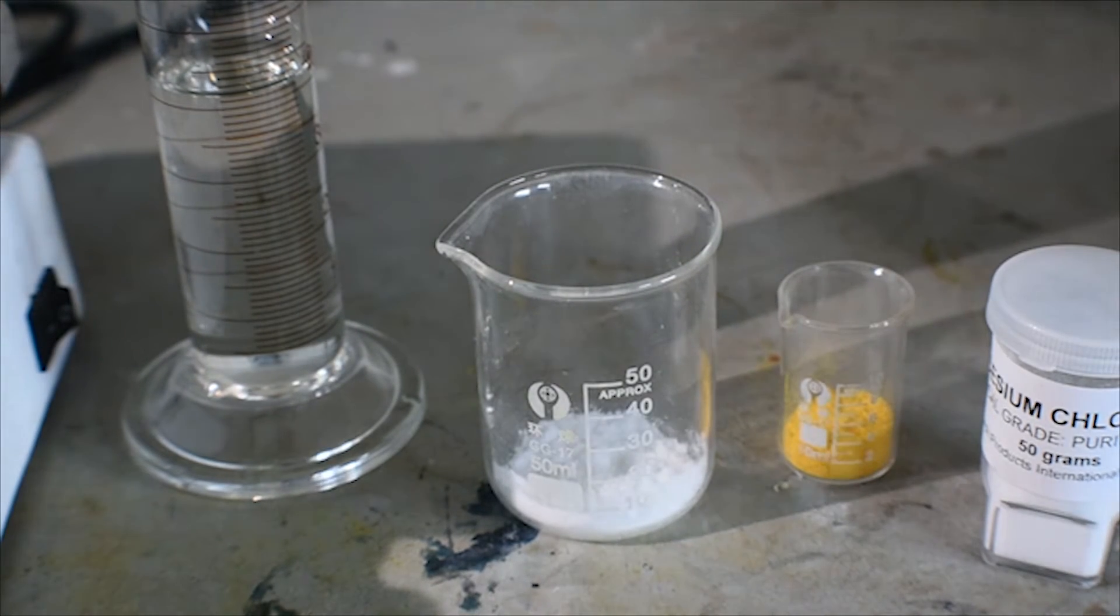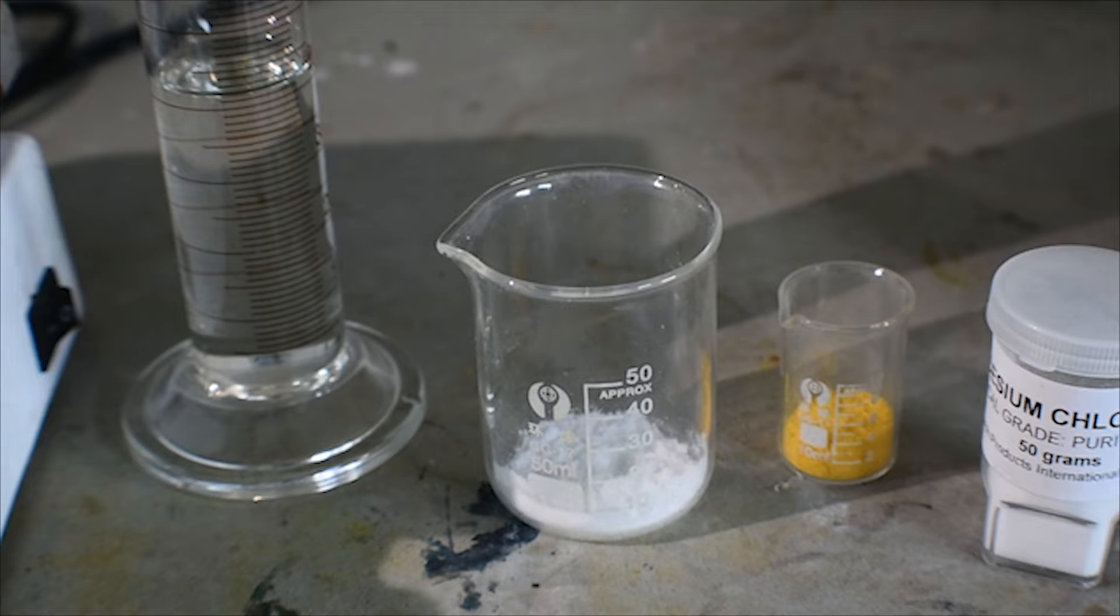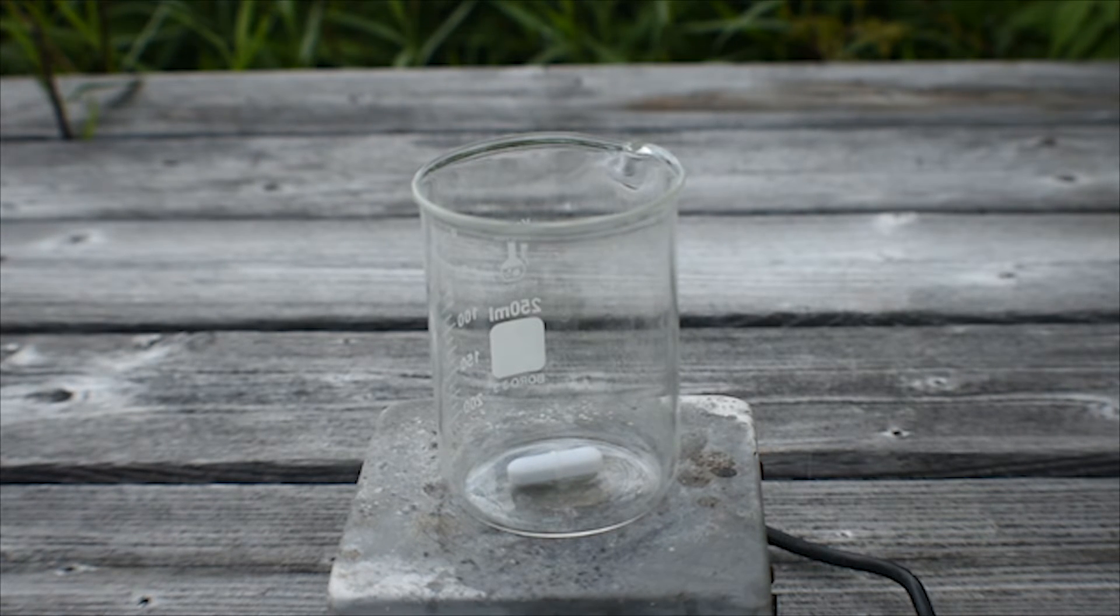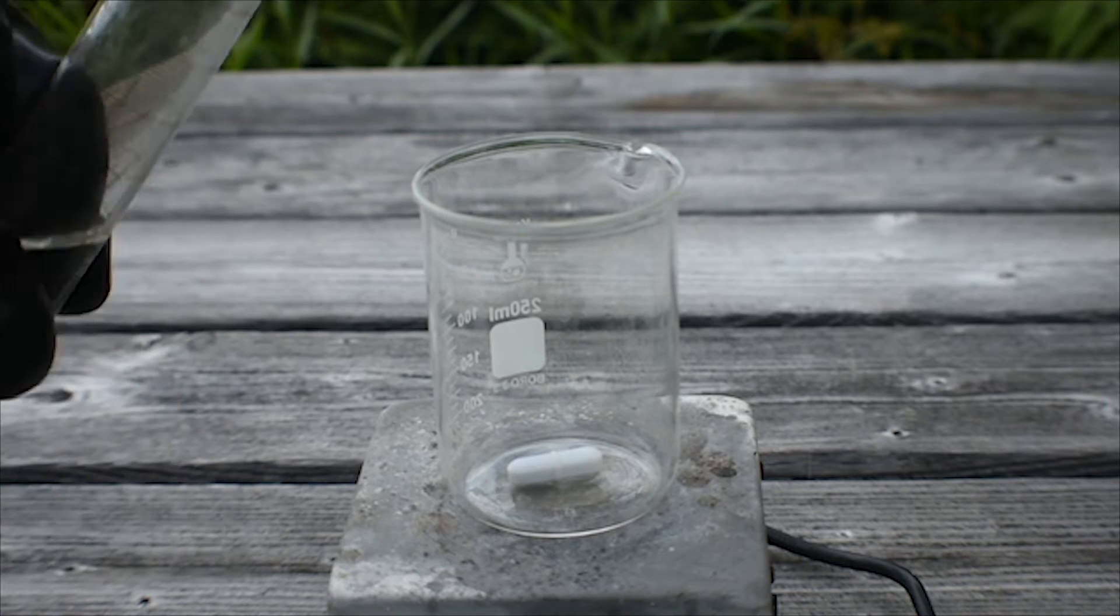So with that being said, I'm going to go outside where ventilation is much better and get on with the reaction. So now that I'm outside, I can continue with the reaction. So I've got a 250 milliliter beaker here, to which I'm going to add the 40 milliliters of hydrochloric acid.